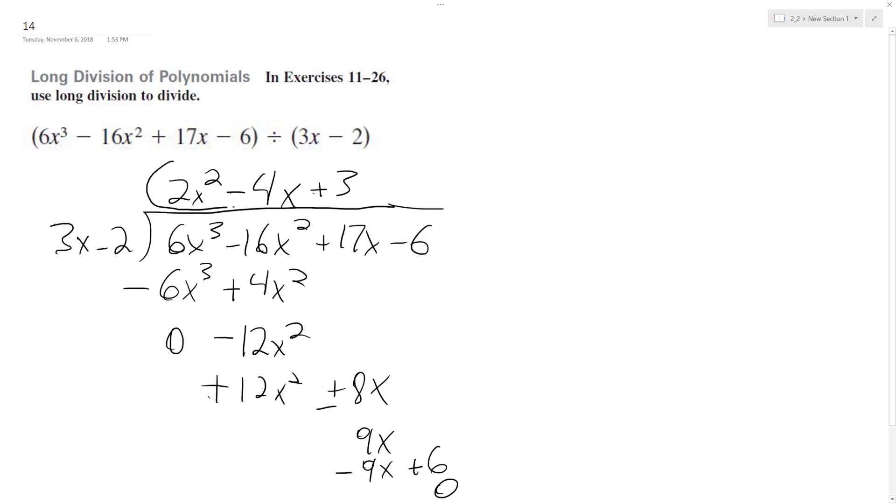So our final solution is 2x² minus 4x plus 3. And that means if we took that times 3x minus 2, we get what we had up here.